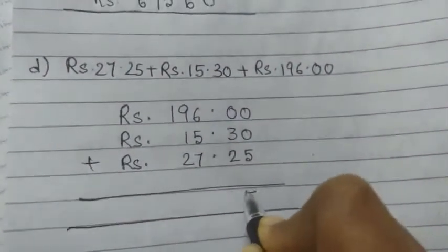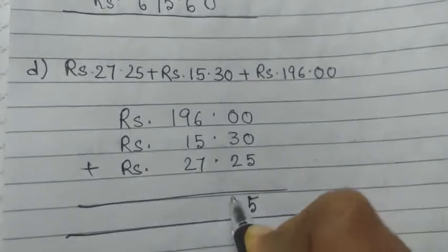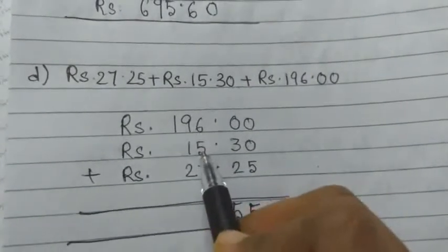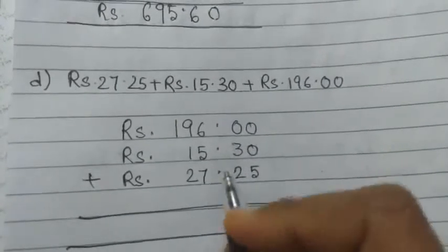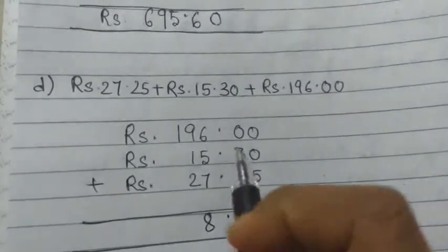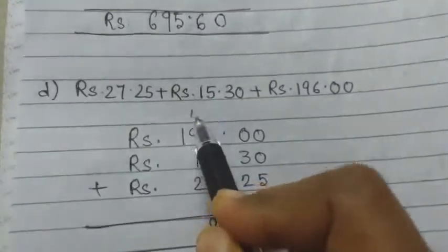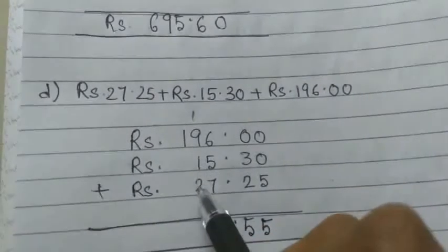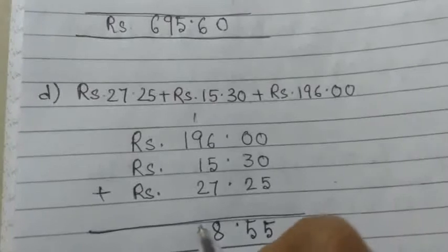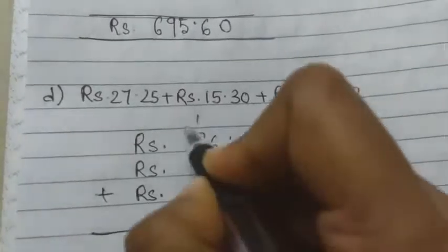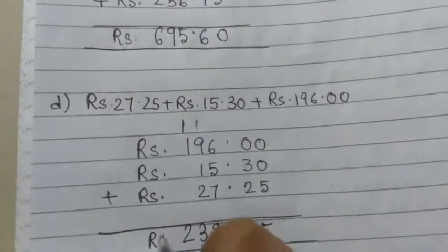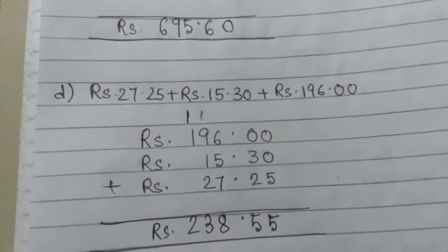So now add. This is 5, 3 plus 2 equals 5, so 55 paise. And 6 plus 5 equals 11, 11 plus 8 equals 19, write 8 and carry 1. 1 plus 9 equals 10, plus 1 equals 11, plus 2 equals 13, write 3 here and carry 1. 1 plus 1 equals 2. That means rupees 238 and 55 paise.